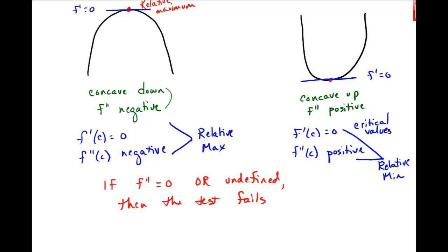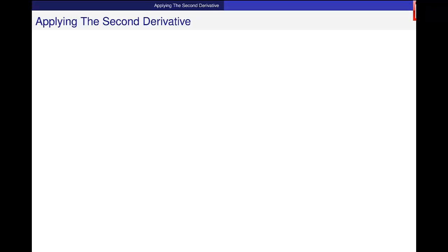Okay? So let's do an example together. And I want to go back to the example that we were working on before this function, f of x is equal to 2 thirds x cubed minus 4x squared plus 6. And I want to use the second derivative to find relative extrema.